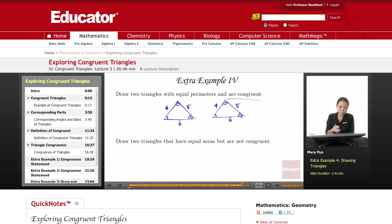So this would be an example of two triangles with equal perimeters that are congruent because I showed that all three sides are congruent, the corresponding sides are congruent, and the corresponding angles are congruent.